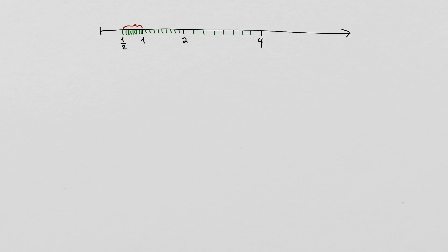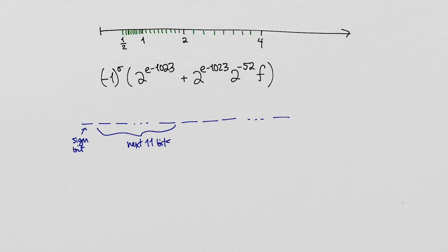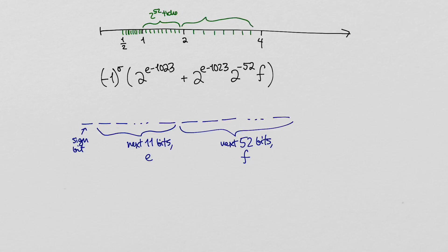To specify one of these ticks, we can indicate which power of 2 we're between with the number e formed by the 11 bits after the sign bit, and we can specify a particular tick between those powers of 2 using the remaining 52 bits. This means that we get 52 representable numbers between each pair of consecutive powers of 2. We can write down a formula for the value corresponding to each bit string: we multiply minus 1 to the sign bit by 2 to the e minus 1023, plus f times the tick width for that interval.